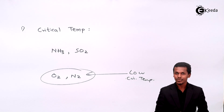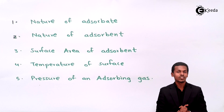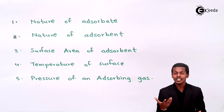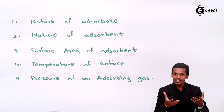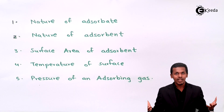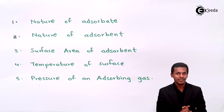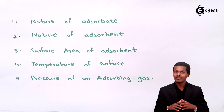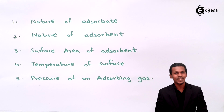Now let us talk about the next factor: the nature of the adsorbent. Adsorption is a surface phenomenon, and the gas gets deposited on the surface of the adsorbent. If the surface is larger, more gas can be deposited. So the surface area of the adsorbent plays a significant role — more surface area means more gas can be easily deposited.